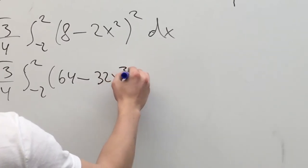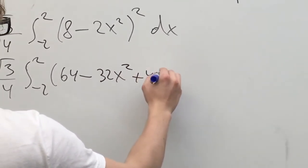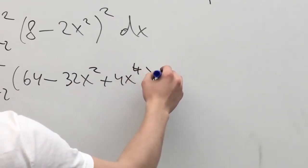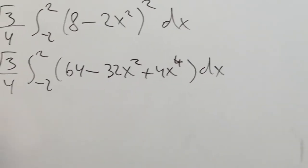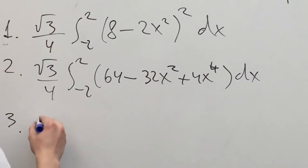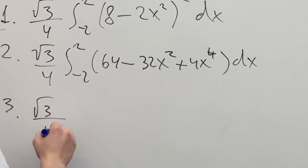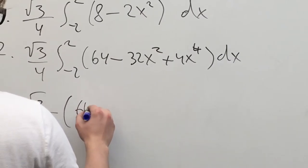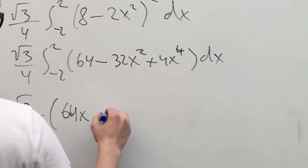We can write the expression in parentheses as 8 minus 2x squared squared times dx. Now we can simplify the expression in parentheses. We get 64 minus 32x squared plus 4x to the fourth times dx.